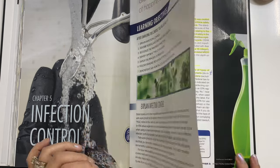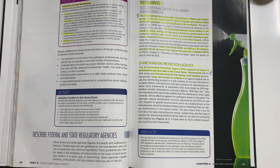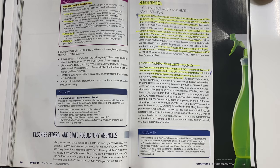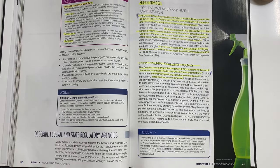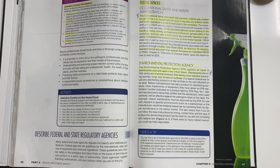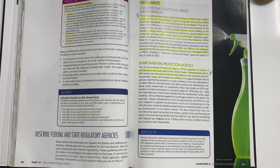Let's go to page 97. At the very top it says 'Federal Agencies.' All of this should already be highlighted from the previous video. The Occupational Safety and Health Administration, also known as OSHA, was created as part of the US Department of Labor to regulate and enforce safety and health standards to protect employees in the workplace.